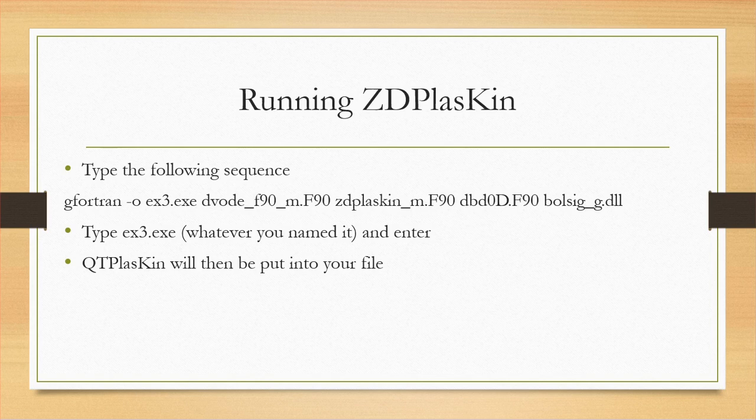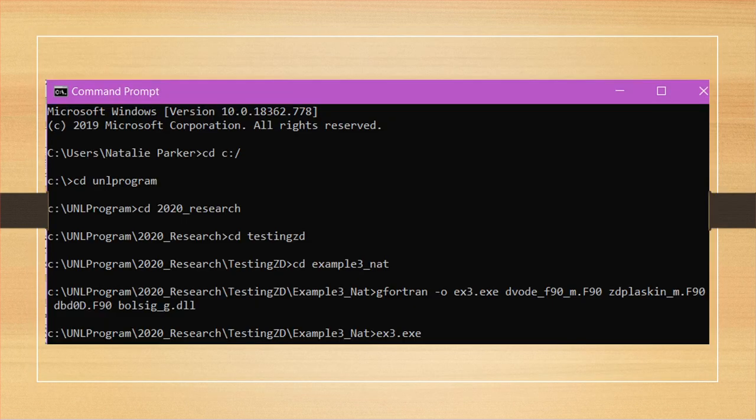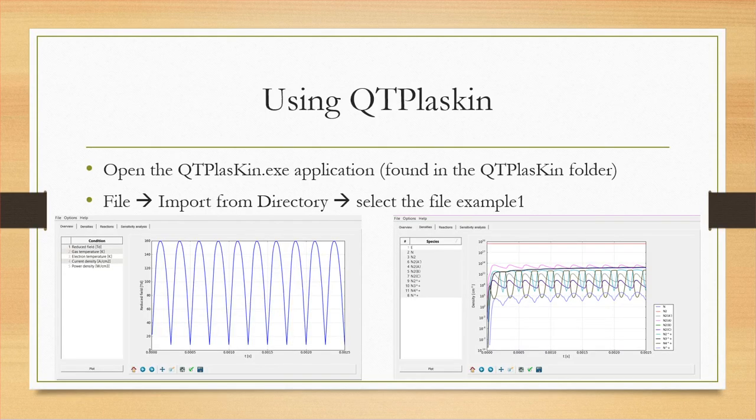Now to visualize the results, open up QDPlaskin, go to file, and then import from directory. On the left, I have shown a graph for the reduced field. We can see the behavior of this and how it looks just like we put it in our data in file. Then looking to the right, this is a bunch of our nitrogen species. We can see that there are forms that could be trending, but it's still really unpredictable from all the oscillation that we're seeing.